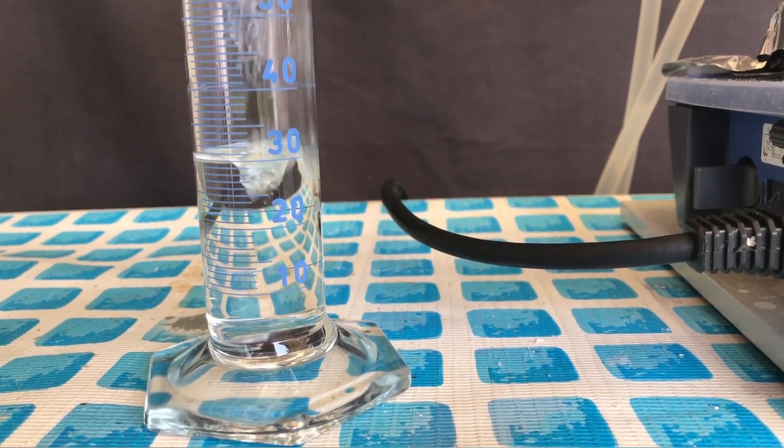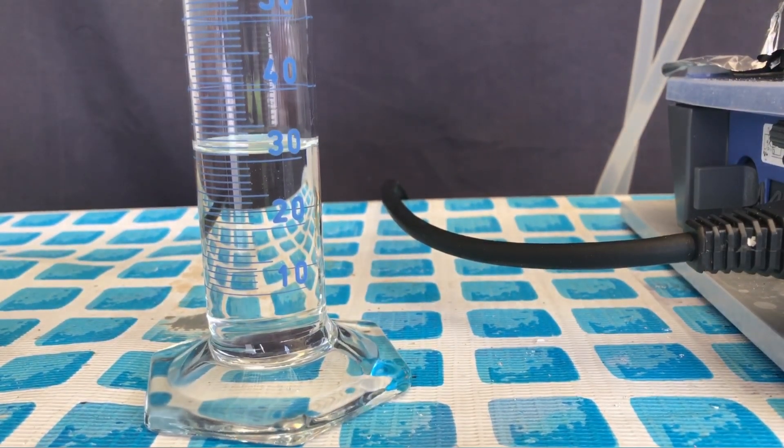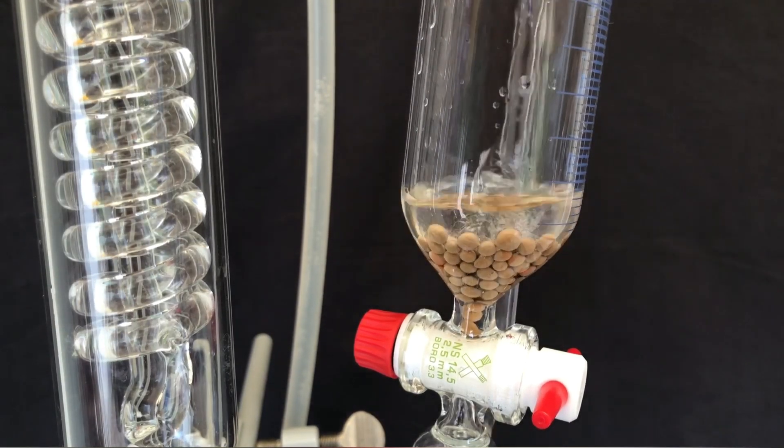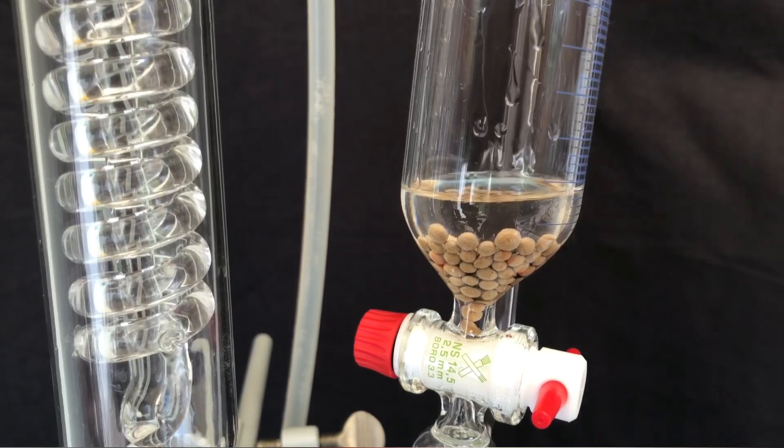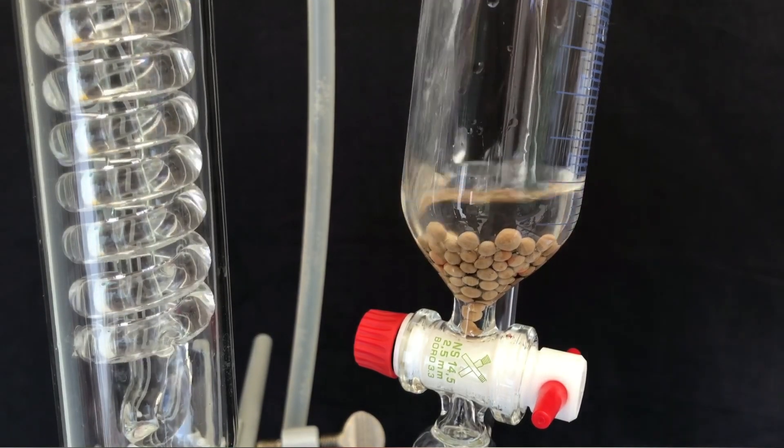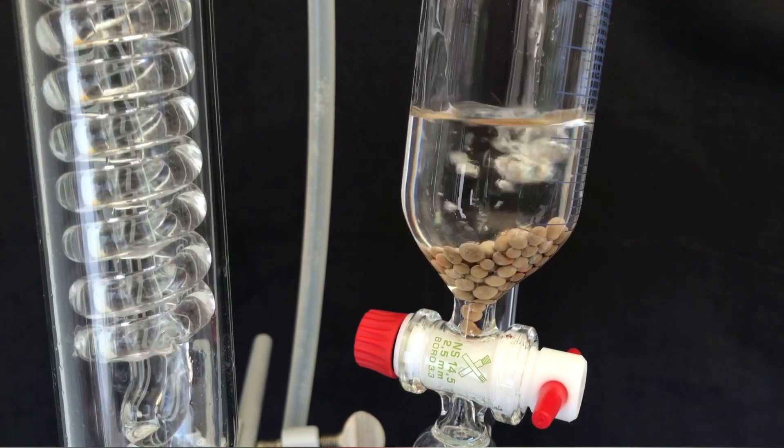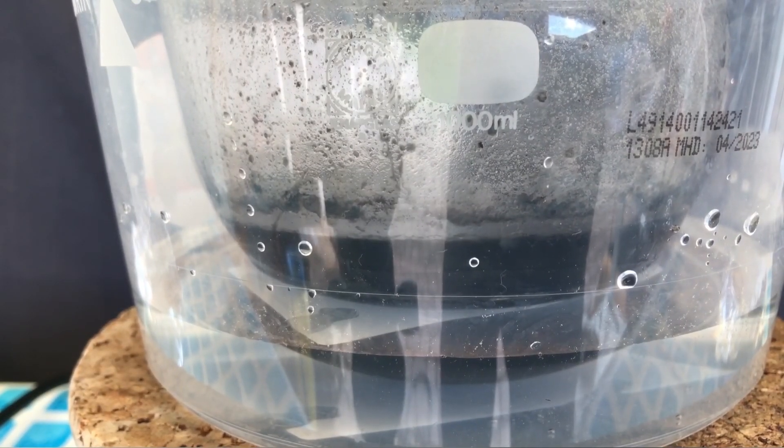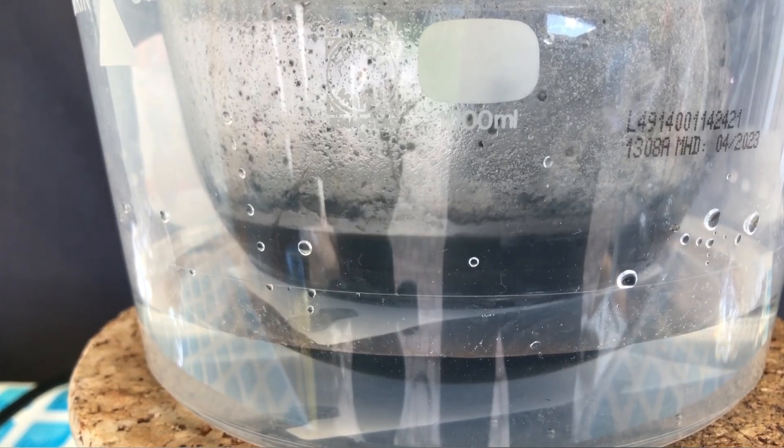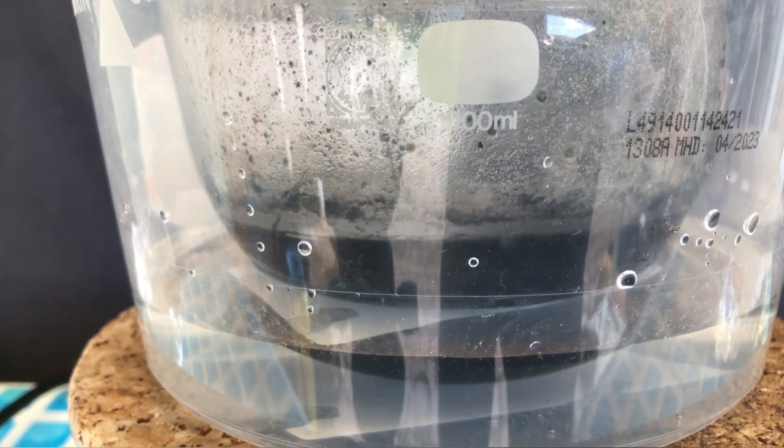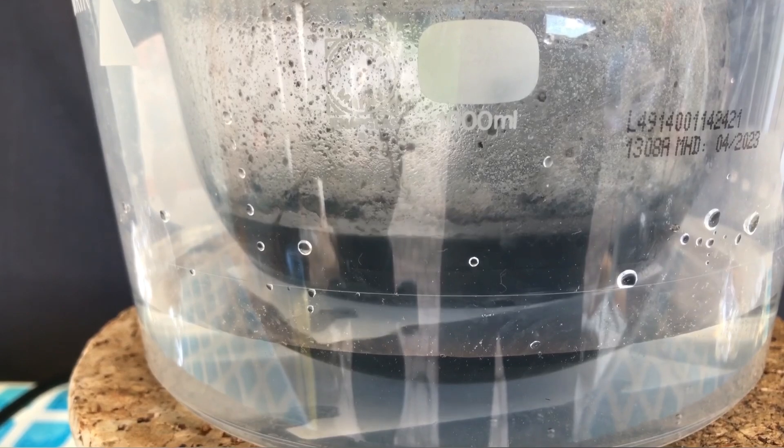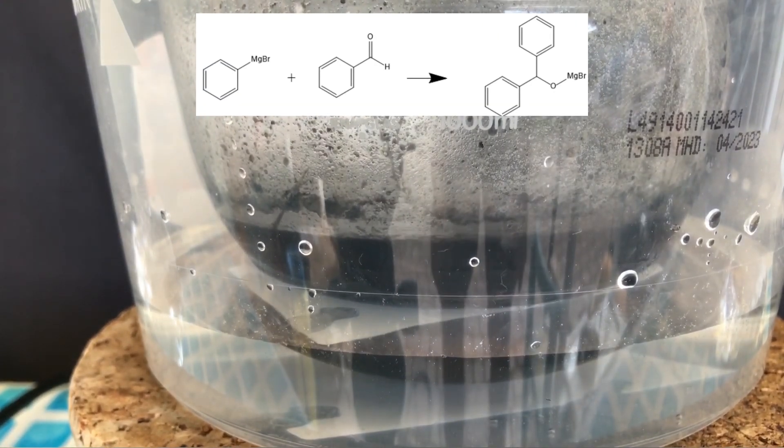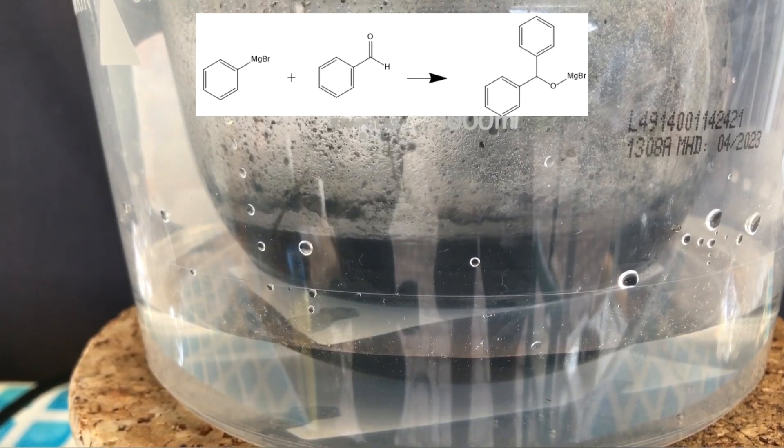The benzaldehyde was then added to the addition funnel. Some splashed over into the reaction flask as you can see here, but this shouldn't be a big deal. The benzaldehyde was added really slowly and the solution was kept as cold as possible. I also added some ice water occasionally. All of this brings us to the second part of the reaction.